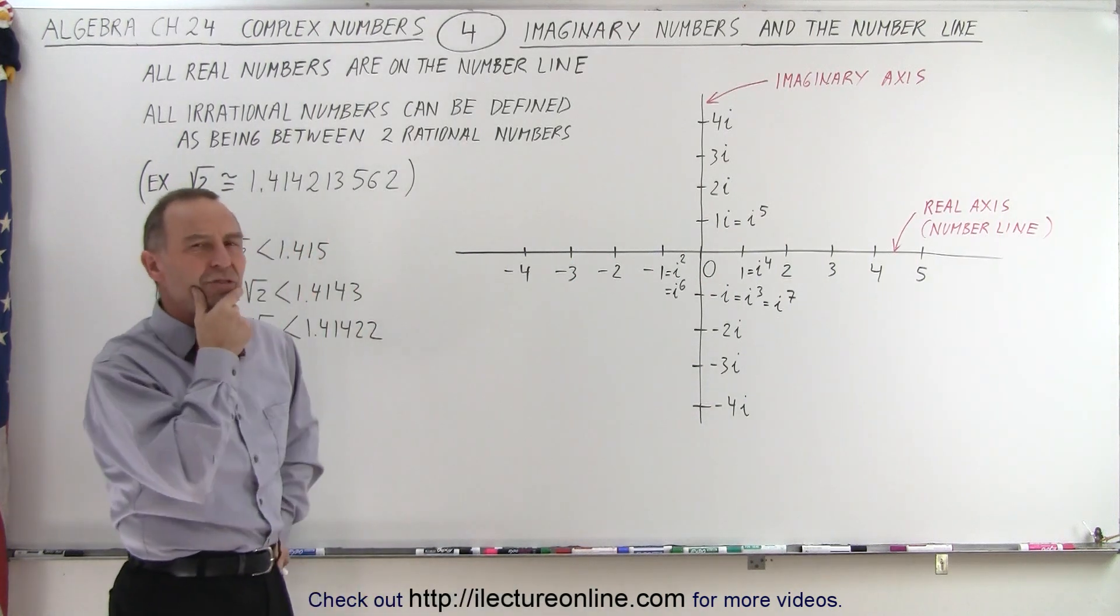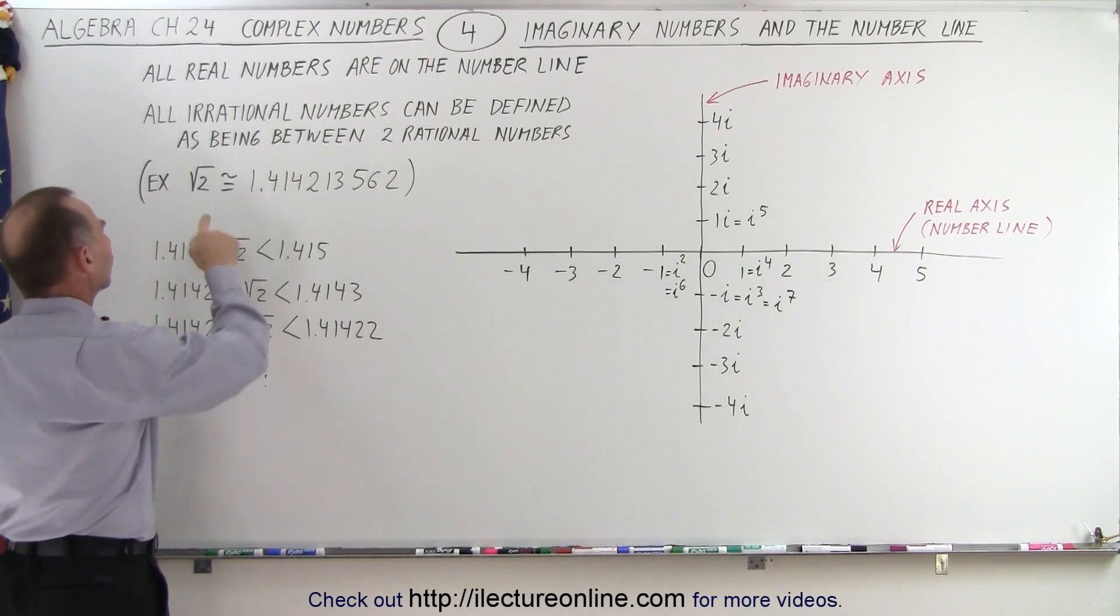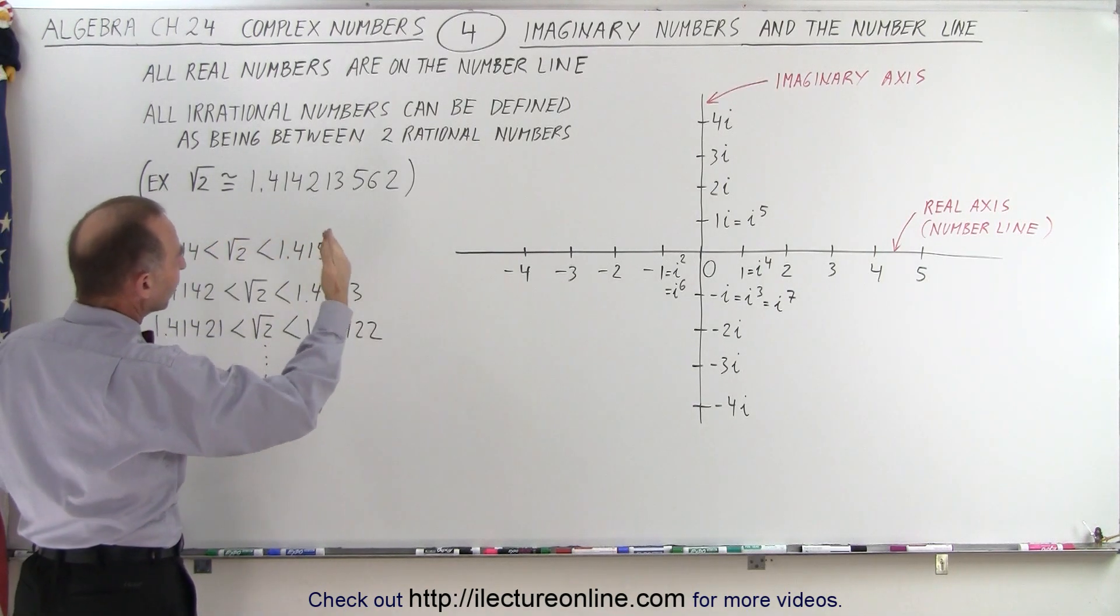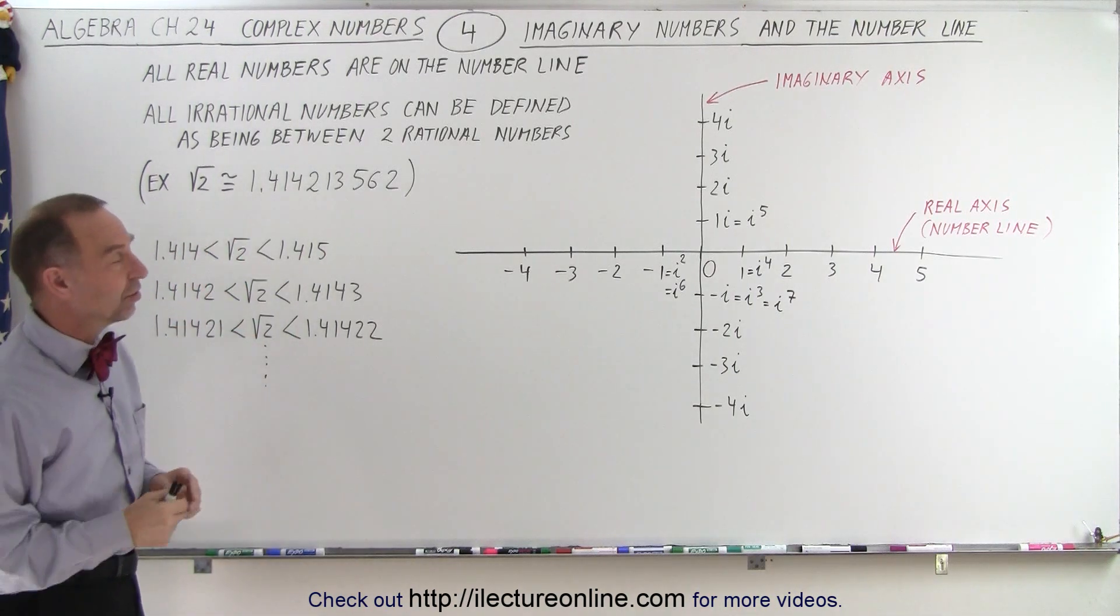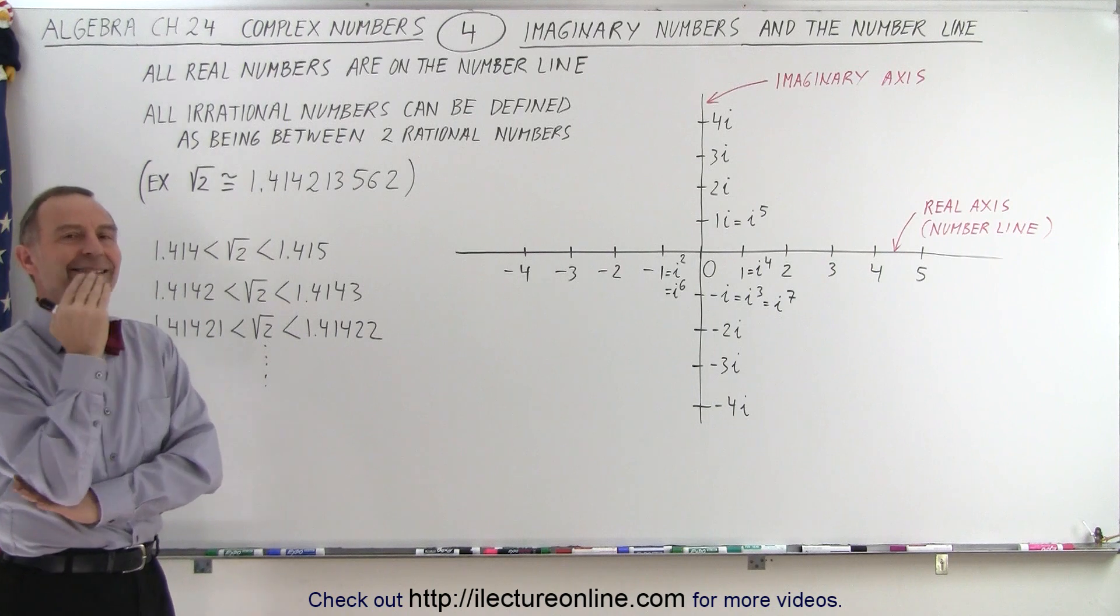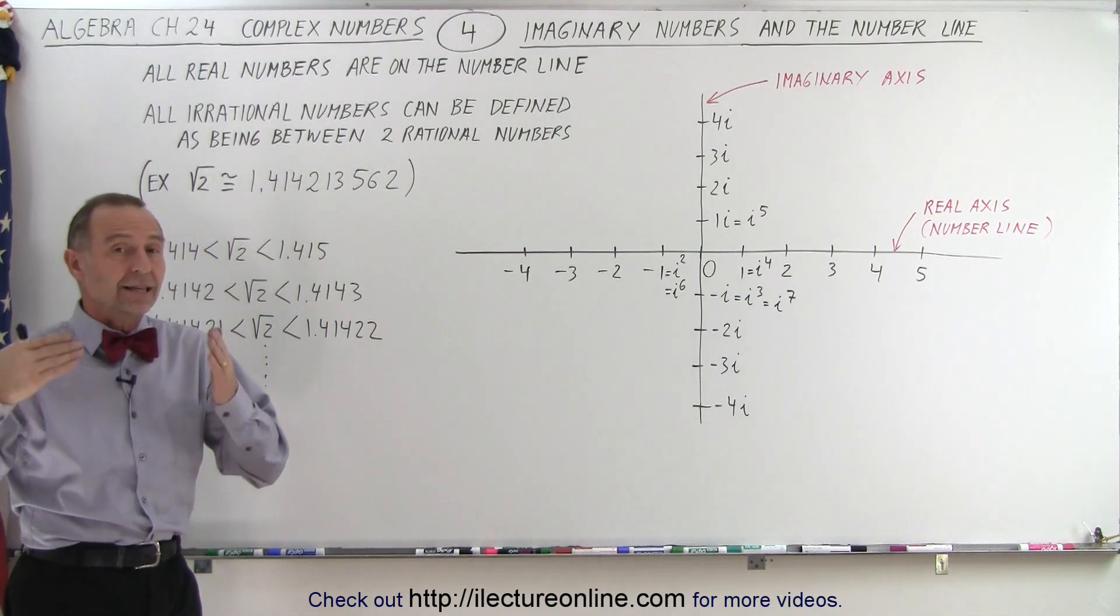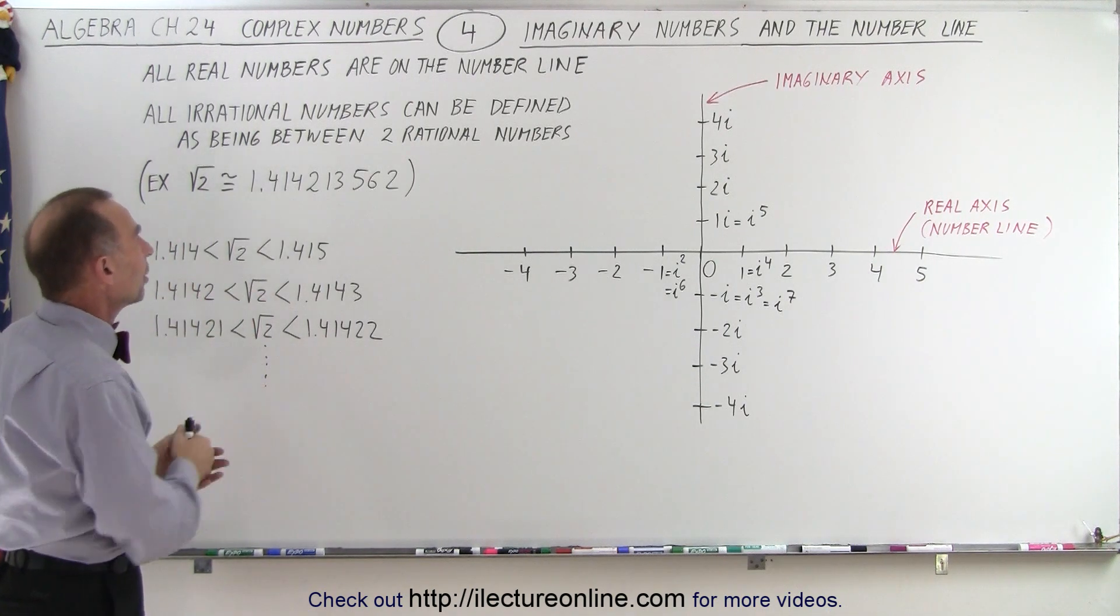However, where do we place the square root of 2? Well, we know if we grab a calculator that the square root of 2 is approximately equal to 1.414213562. If I had a better calculator, we can get more digits. But that's not the exact value for the square root of 2. Matter of fact, we cannot find the exact value of the square root of 2. That's why we call it an irrational number.